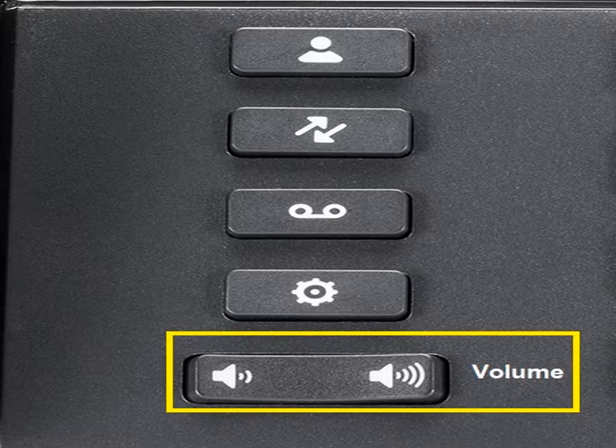Volume control is separate for each mode: picking up the handset adjusts handset volume, using a headset adjusts headset volume, and adjusting while the phone is ringing changes ringer volume. The first time you get a call, you can adjust the ringer volume up or down while it's ringing, then pick up — it will save at that volume.